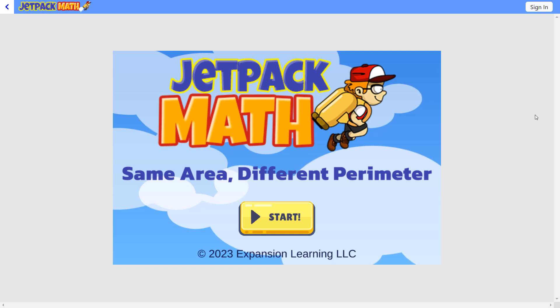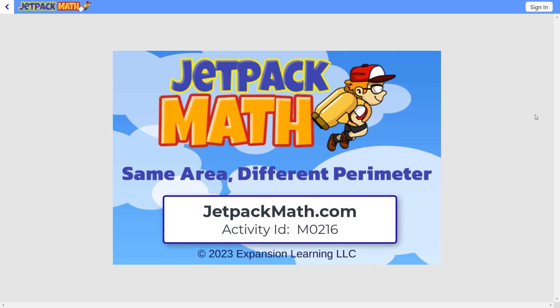Same area, different perimeter. To run this activity, visit jetpackmath.com and enter activity ID M0216.